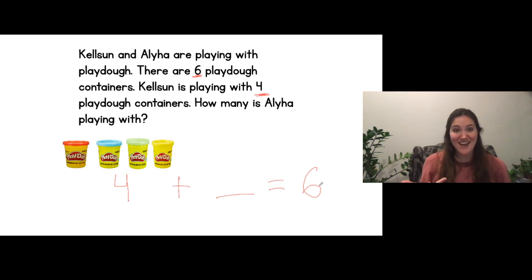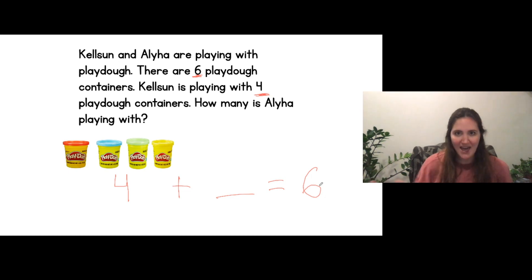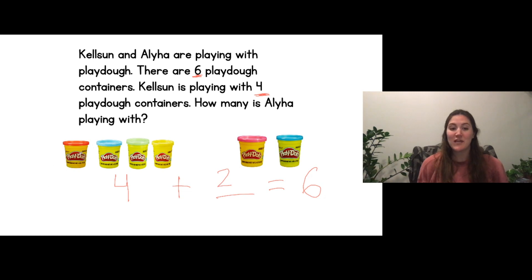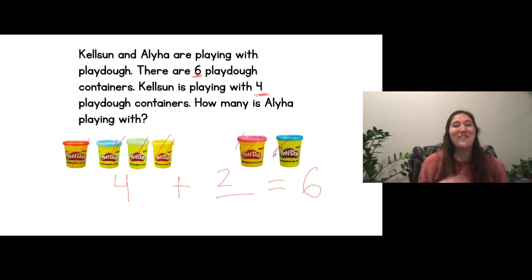Okay for this one, Kelson and Aaliyah had six play-doh containers altogether. We knew that Kelson had four. How many did Aaliyah have? She had two play-doh containers, so you should have had the number two. Four plus two equals six. One, two, three, four plus one, two equals one, two, three, four, five, six — six altogether. That makes sense. Great job kindergarteners! I'll put some more word problems like this on Class Dojo if you want to do some more practice. Okay bye for now!